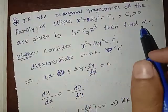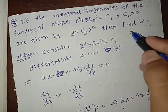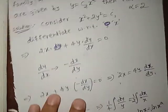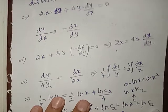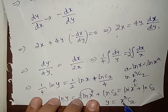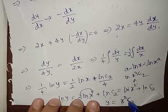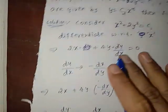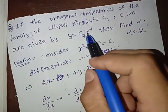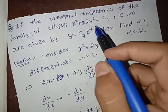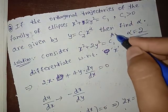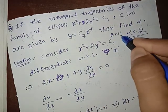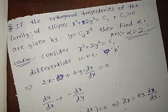Comparing y = c₂x² with the given form y = c₂x^α, we can see that α = 2. This is the correct answer.